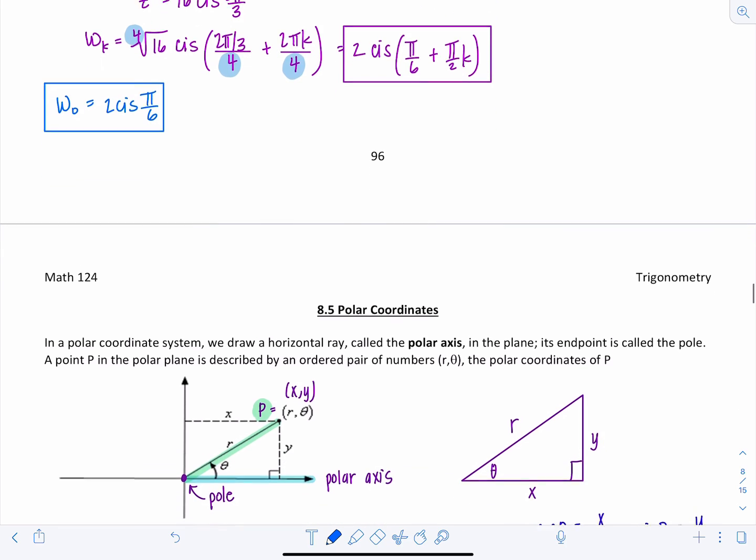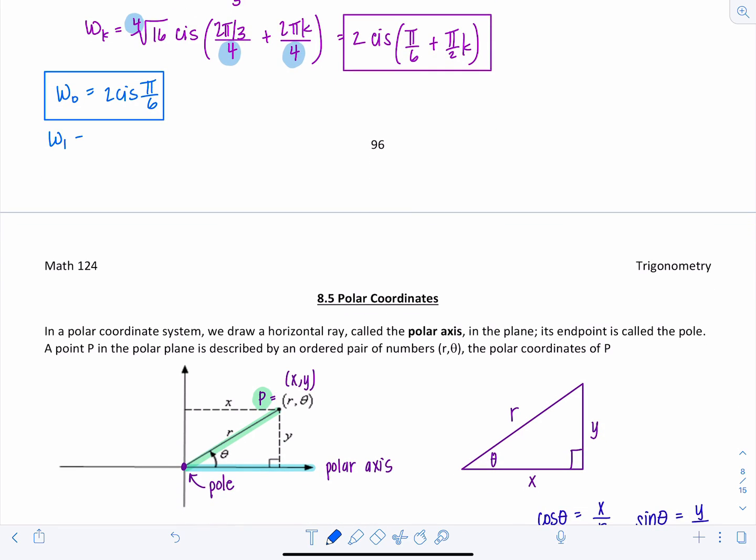W sub 1, we have 2 cis pi over 6 plus pi over 2. Pi over 2 is 3 pi over 6, plus pi over 6 is 4 pi over 6. So that's going to reduce to 2 cis 2 pi over 3.